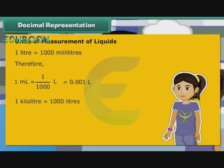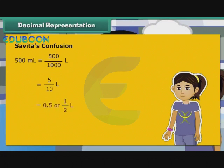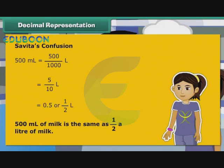1 kilolitre is equal to 1000 litres. Therefore, 1 litre is equal to 1 by 1000 kilolitre, that is 0.001 kilolitre. Now, revisiting Savita's confusion: 500 ml is equal to 500 by 1000 litre, that is 5 by 10 litre, which equals 0.5 or 1 by 2 litre. So 500 ml of milk is the same as half a litre of milk. Savita is now relieved.